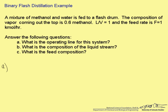First, do a component mass balance for methanol. That means that F, the feed stream in, times Z, the composition of methanol in that feed stream, is equal to V, the vapor stream, times Y, the composition of methanol in the vapor out, plus L times the composition of X, the methanol in the liquid stream out.